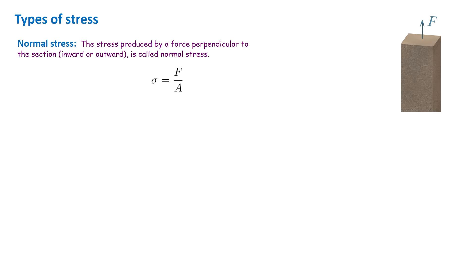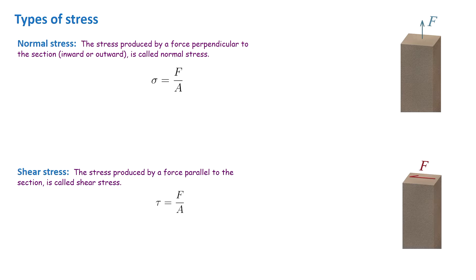If the force is perpendicular to the section, either inward or outward, the produced stress is called normal stress. If the force is parallel to the section, it will develop shear stress. Normal stress is typically shown by the Greek letter sigma, and shear stress is typically shown by the Greek letter tau. Both are calculated as force divided by area; the only difference is the direction of the applied force.